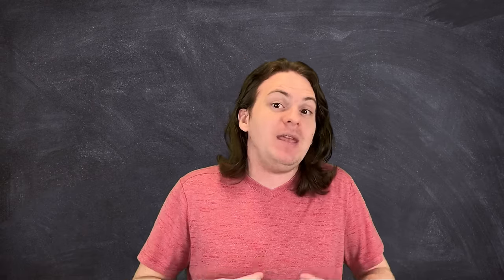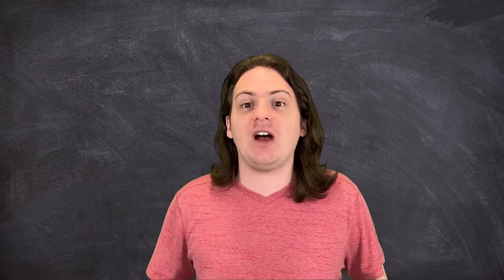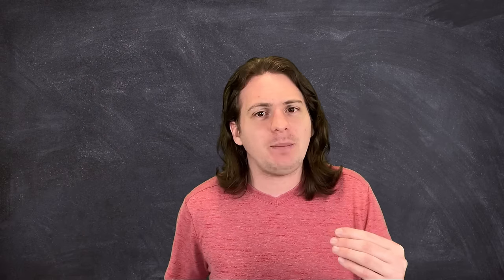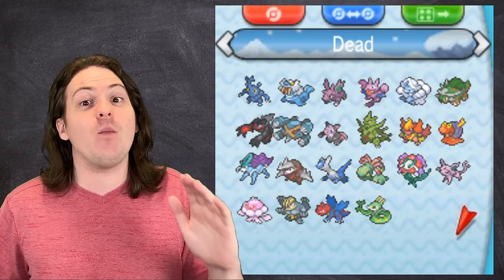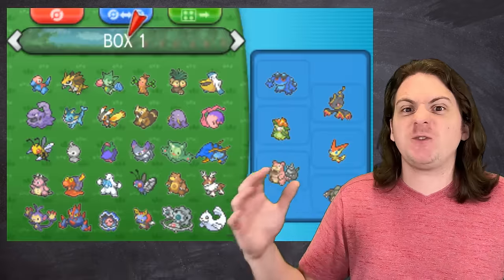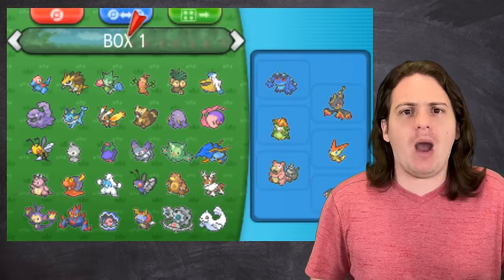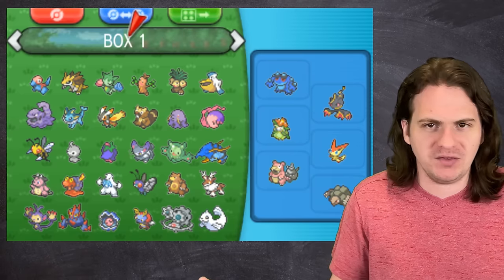Due to a series of bad cage match performances and me being a complete idiot and challenging Tate and Liza when I was severely underleveled, I ended up losing all my perked Pokemon by the time Wallace was defeated. My team was left in shambles. My box filled with mostly underpowered mons with terrible movesets.